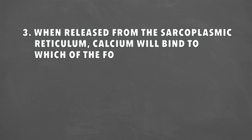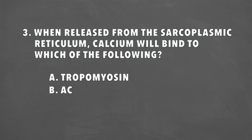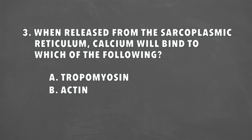Question number three: when released from the sarcoplasmic reticulum, calcium will bind to which of the following? Is it A, tropomyosin; B, actin; or C, troponin? The answer is C, troponin. The calcium binds directly to the troponin, which then moves the tropomyosin out of the way of the active binding site.